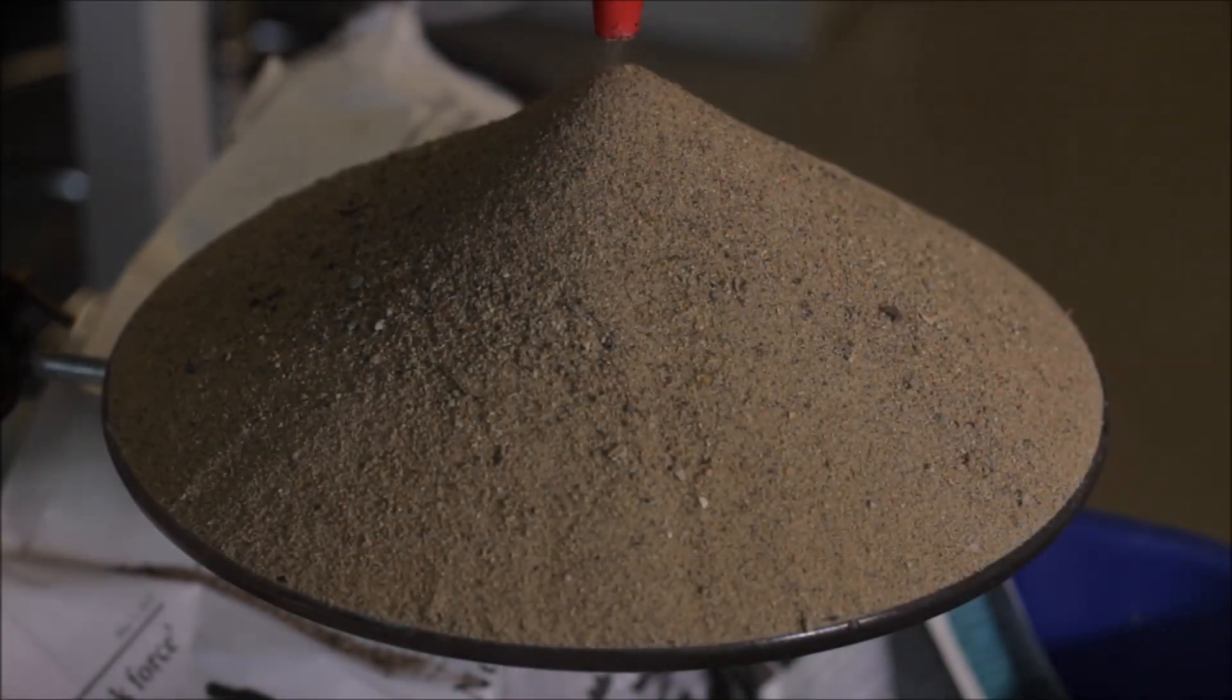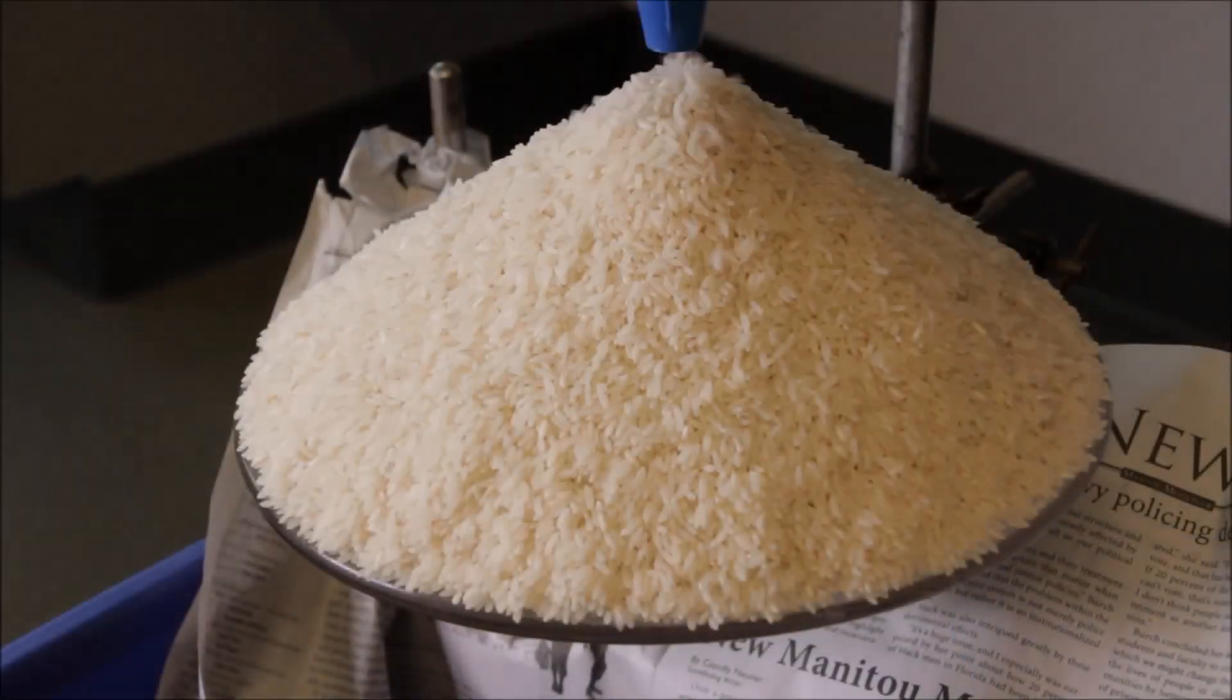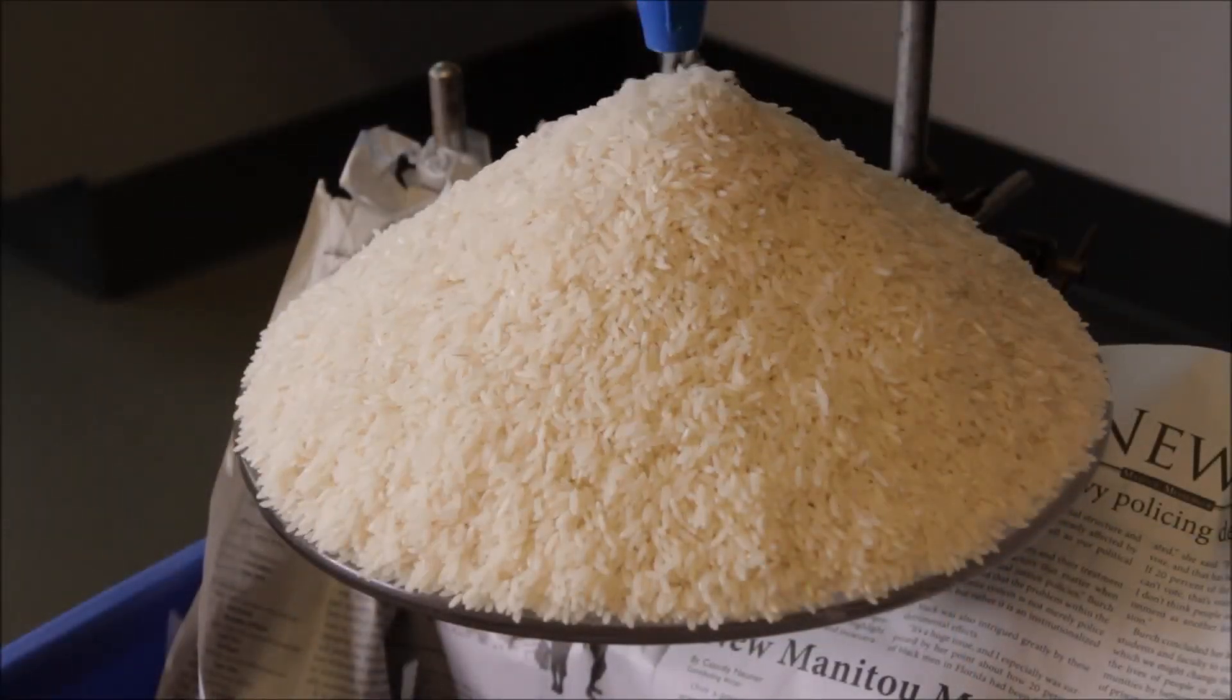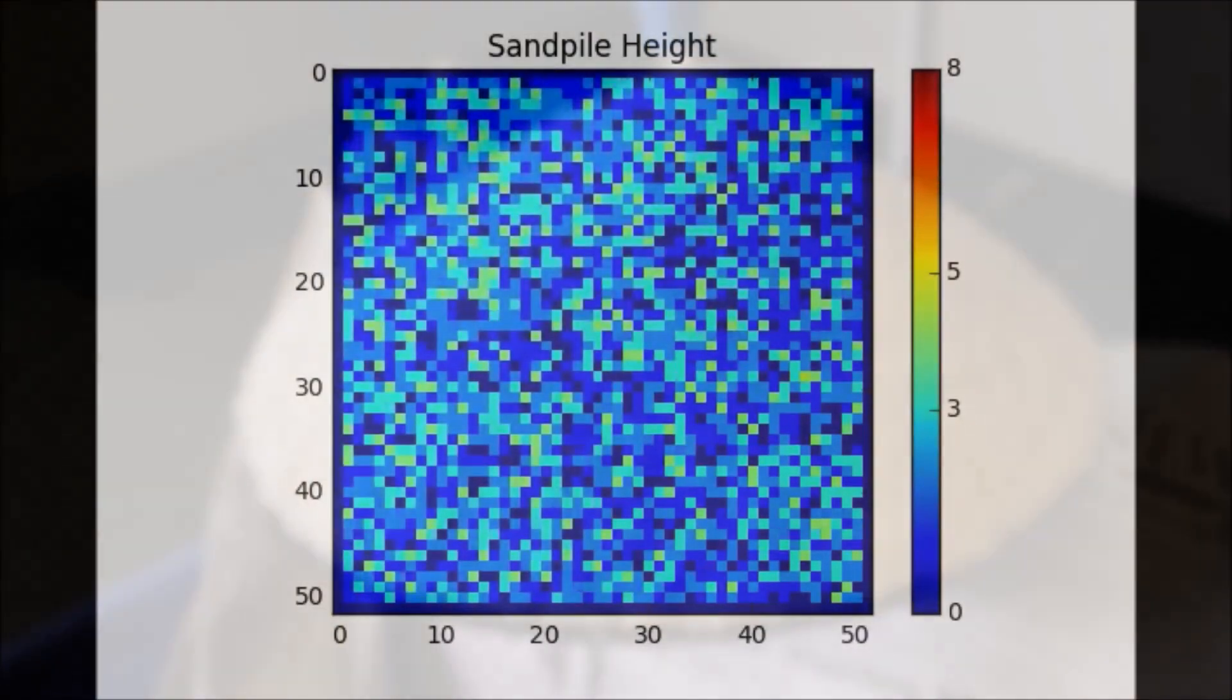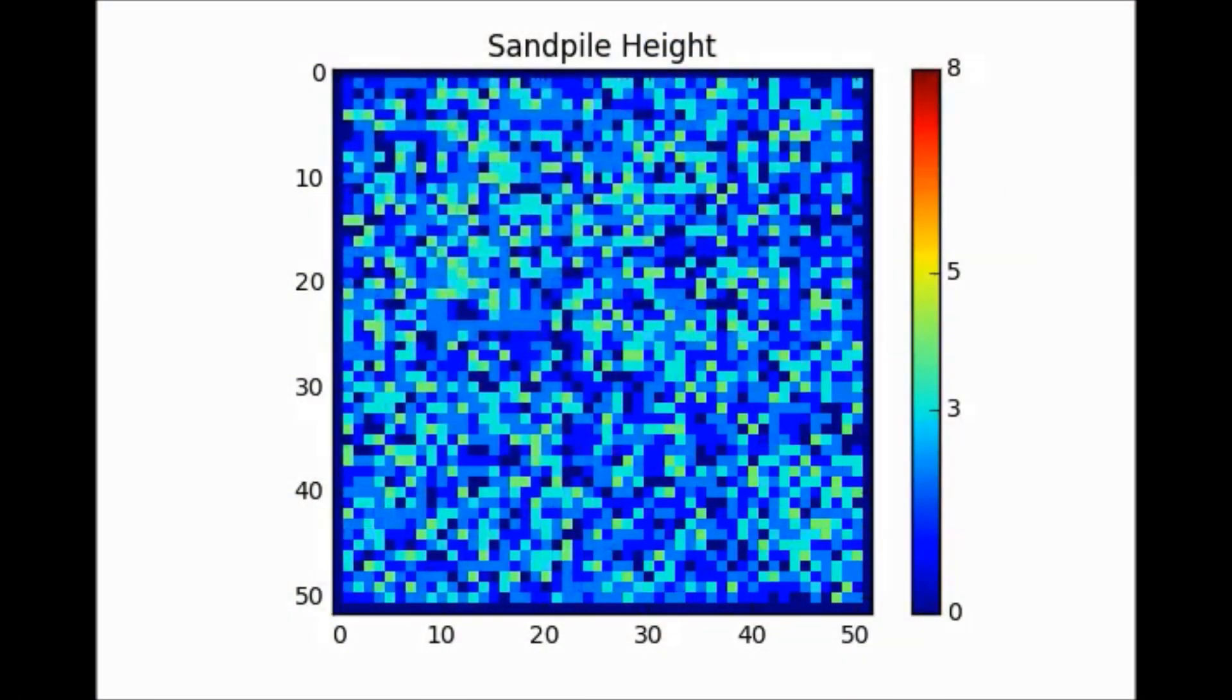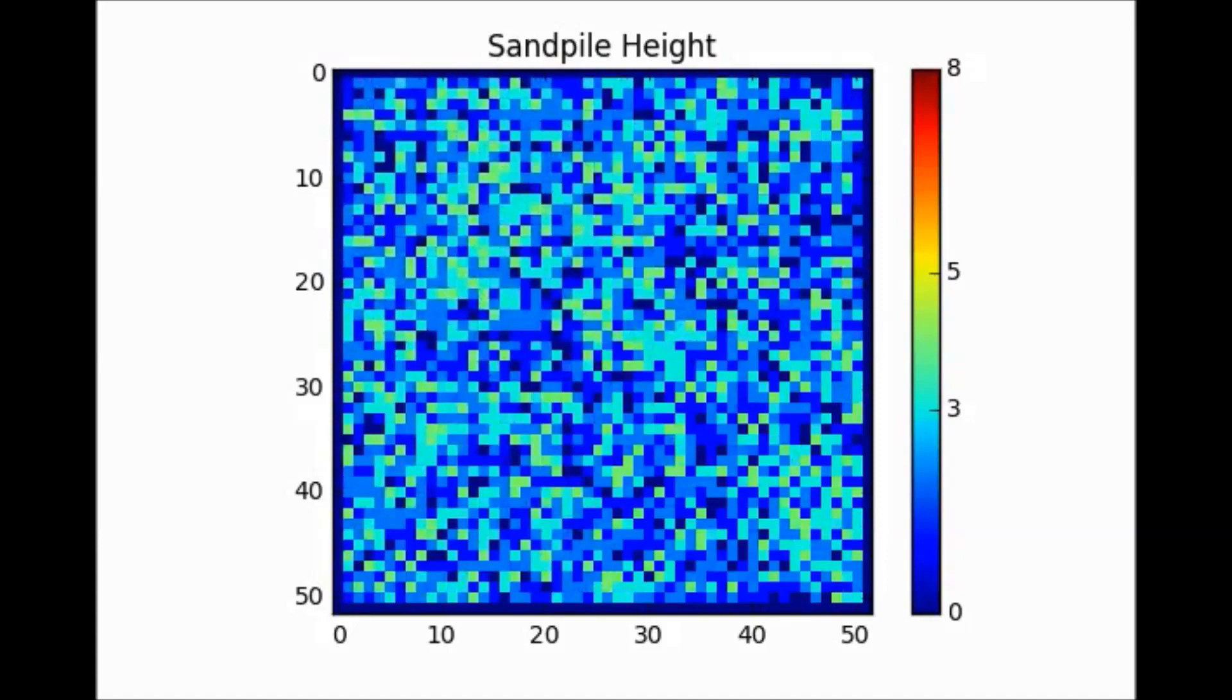To summarize our discussion, we've shown how although physical sand piles do not display characteristics of self-organized criticality, other granular media do obey the behavior outlined by Per Bak. Through our cellular automation, we've shown some of the basic behavior of a system that organizes itself to a critical state in which avalanches occur on all length scales with the appropriate power laws.